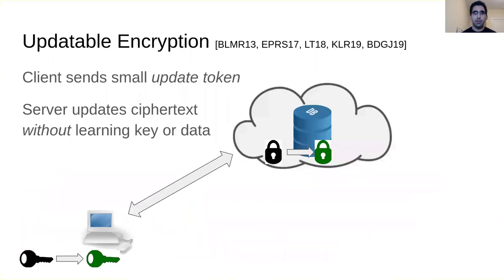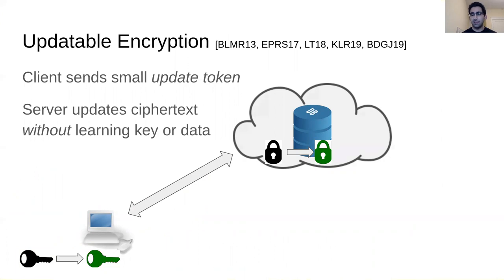This is where the recent line of work on updatable encryption comes into play. Updatable encryption is a paradigm where instead of sending keys or all the data back and forth, the client sends a small update token to the server, and the server uses this token to update the ciphertext to the new key without learning either key or the encrypted data.